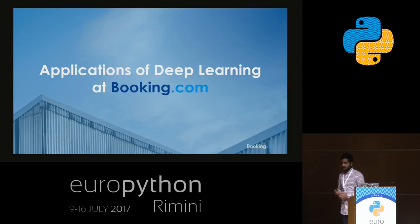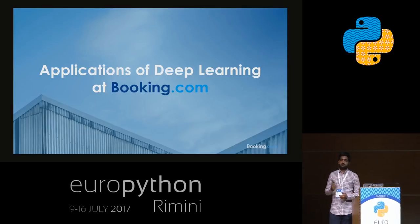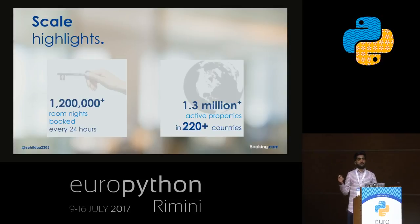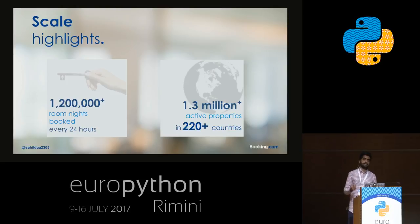Starting with the applications of deep learning at Booking.com — before I talk about those, I'd like to talk about scale. We have over 1.2 million room nights reserved every 24 hours, and these reservations come from more than 1.3 million properties across 220 countries. This large scale provides us access to a huge amount of data that we can utilize to improve the customer experience.